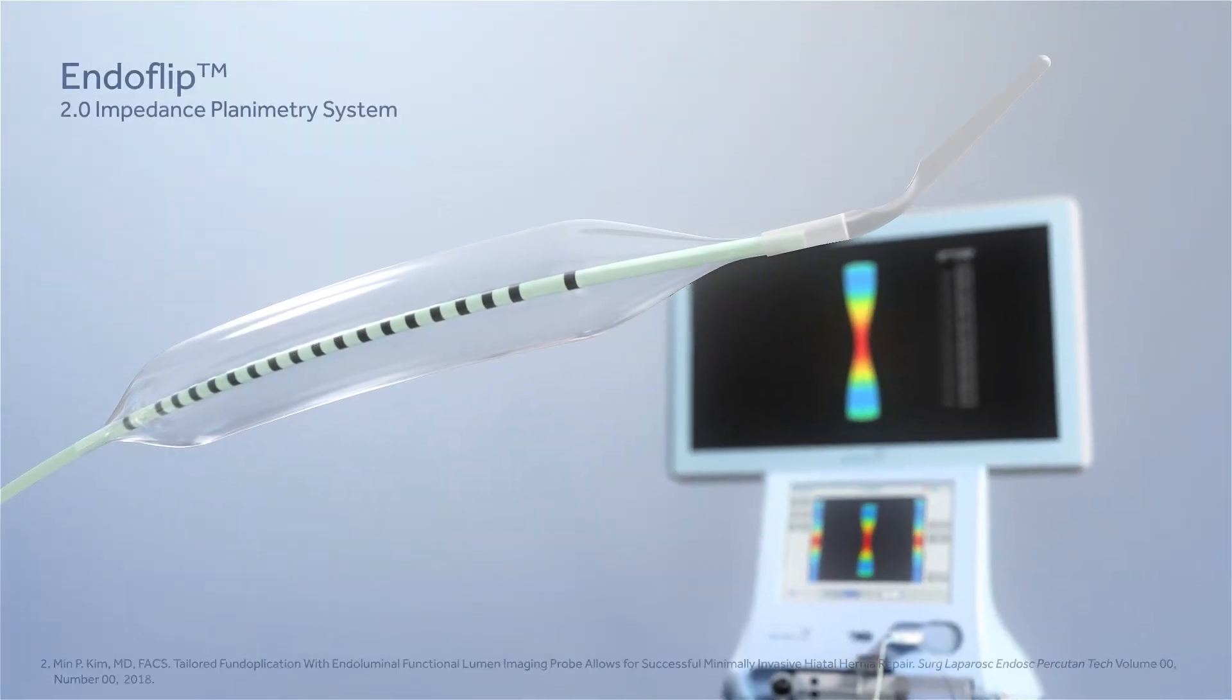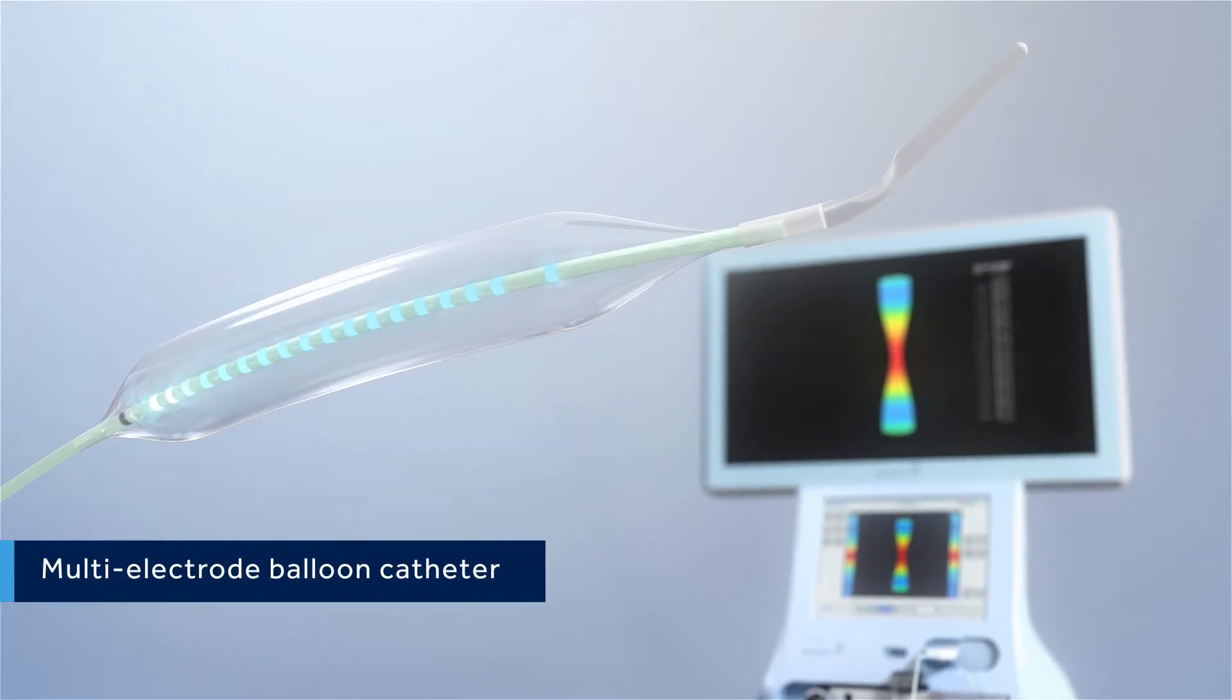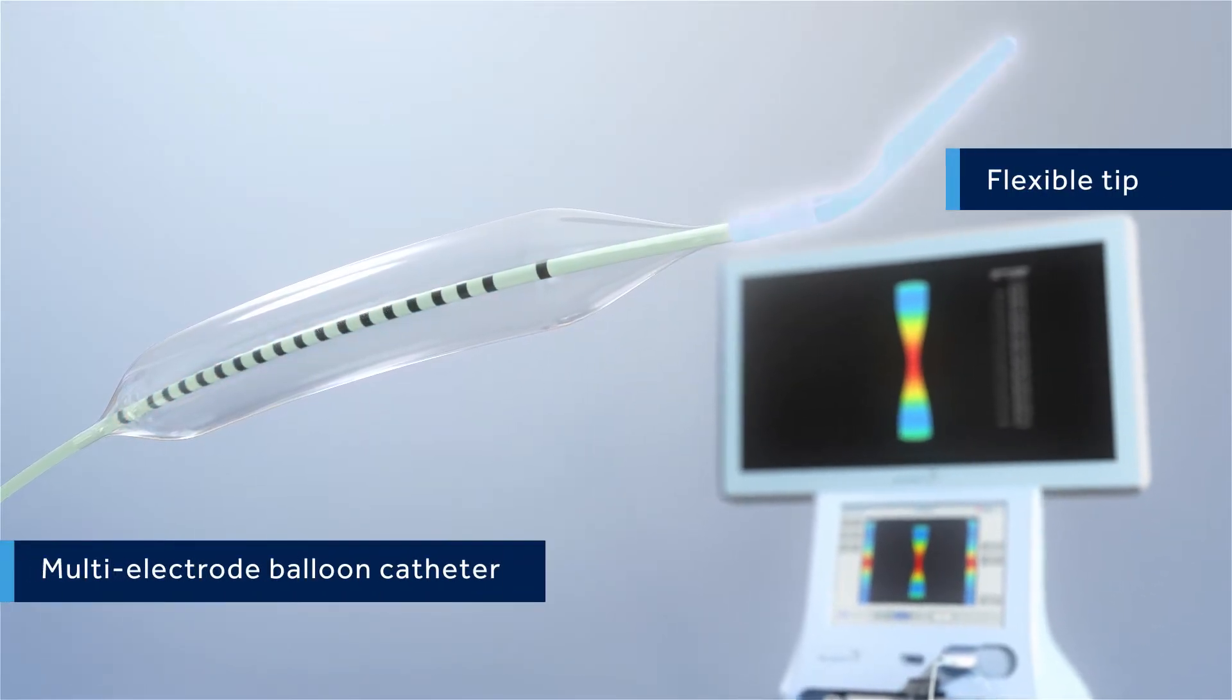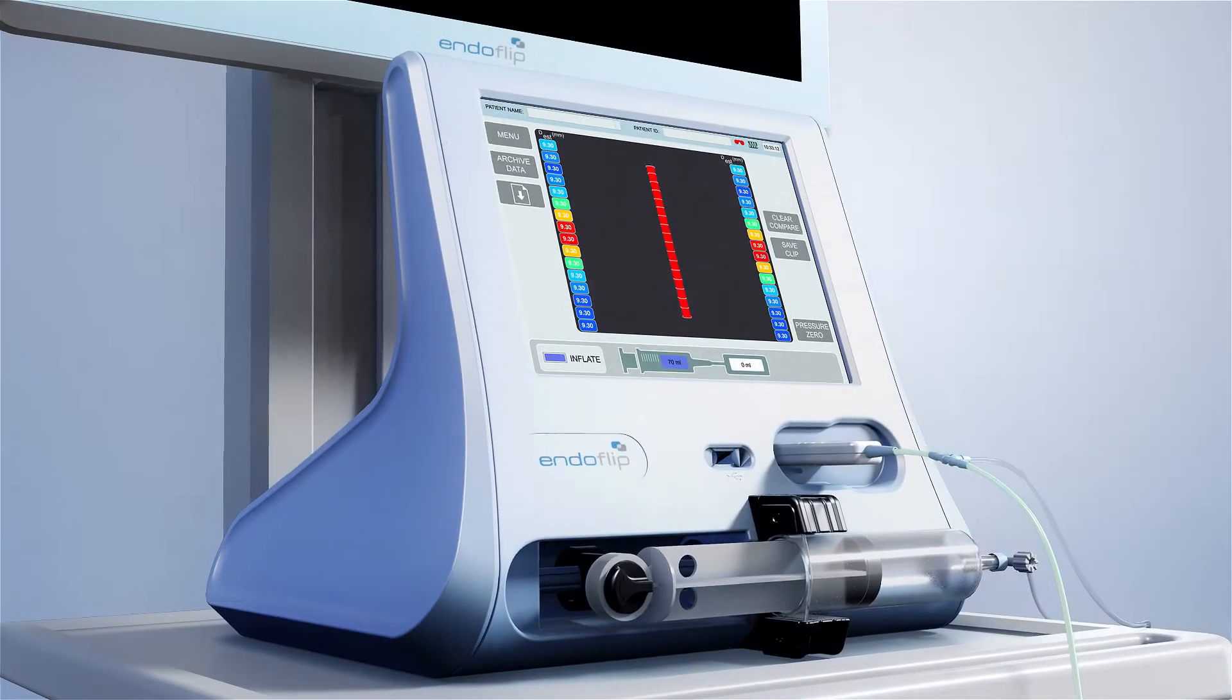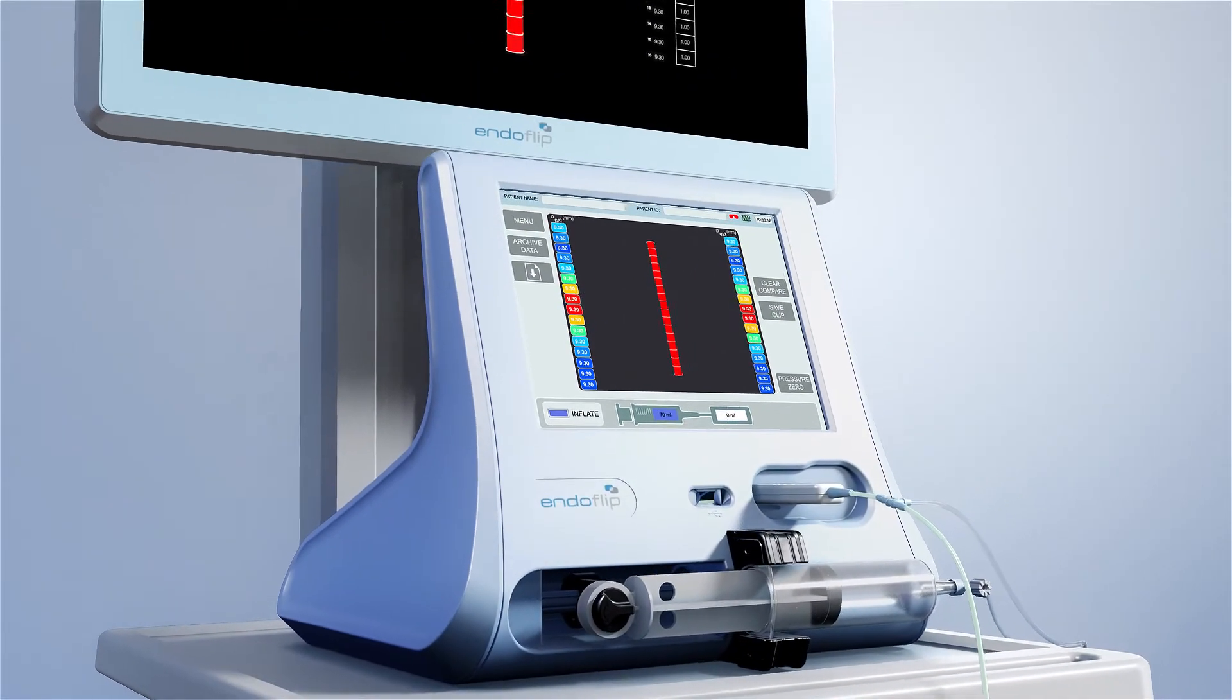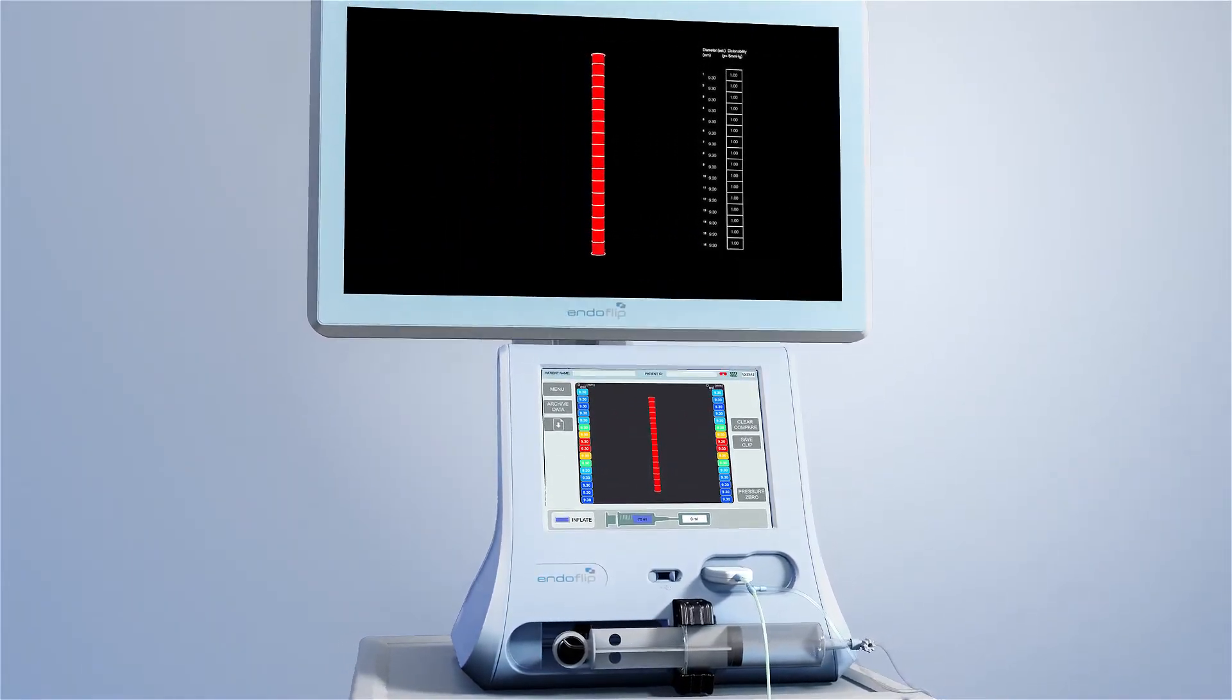The EndoFLIP 2.0 impedance planimetry system includes a multi-electrode balloon catheter with a flexible tip that acts as a functional lumen imaging probe. The system also introduces imaging software that displays esophageal topography output and dimensional changes on a 24-inch touchscreen.